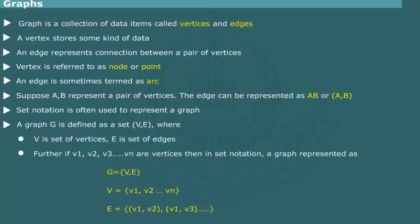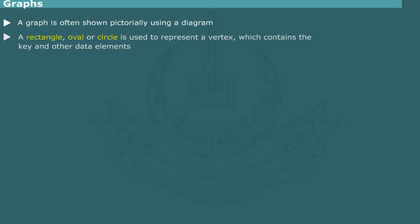If V1, V2, V3 up to VN are the vertices, then using set notations we can write this. More often, graphs are shown pictorially using diagrams. Typically, a rectangle, oval, or circle represents a vertex. Lines or arcs are used to depict the edges.